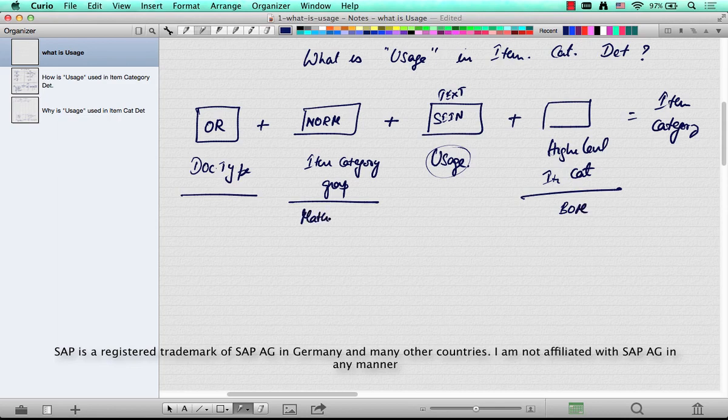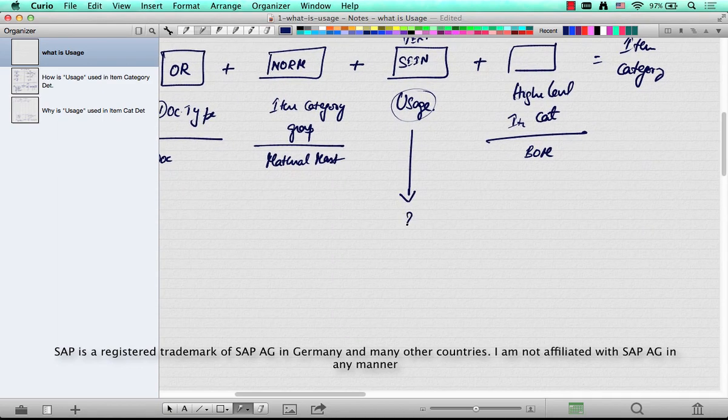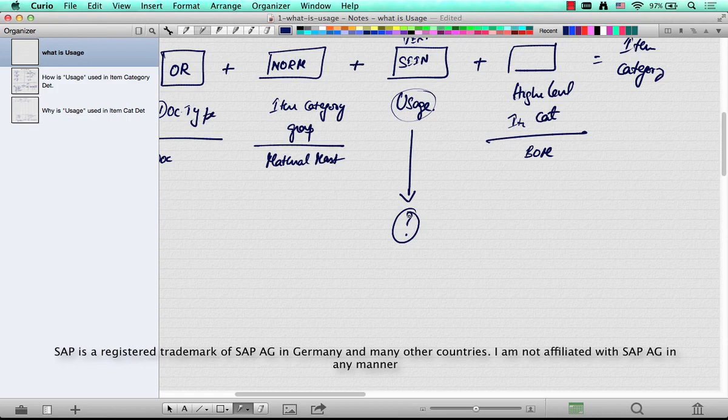This comes from material master, and this is the document itself, document header. What is the source of usage? So where does it come from? There are two ways in which you can see usage in action: one is programmatic, the other is manual.